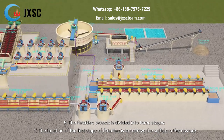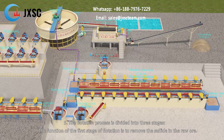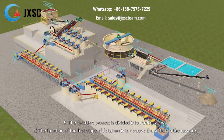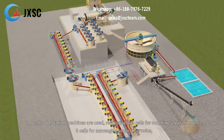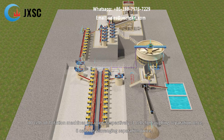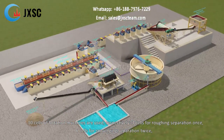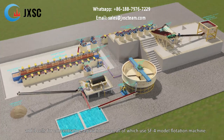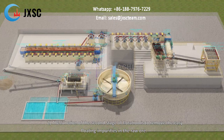The flotation process is divided into three stages. The function of the first stage of flotation is to remove the sulfide in the raw ore. 10 cells of flotation machines are used: 3 cells for roughing separation once, 6 cells for scavenging separation twice, and 3 cells for concentrating separation once — all using the SF-4 model flotation machine.